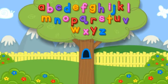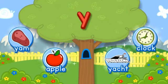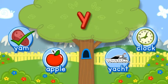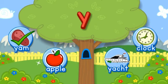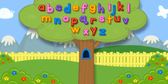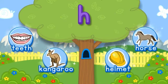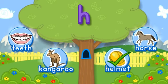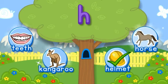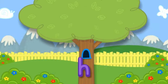Letter tree, letter tree, listen to the letter tree. Click the tree to shake it. Y. Choose the pictures that start with the letter Y. Y-Y-Y-Yam starts with Y. Y-Y-Y-Yat. Horse starts with the letter H. Hooray! You found all of them! Click the letter to put it in the tree.